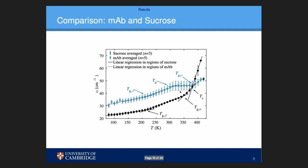If you look at the sample containing only protein, the figure looks slightly different. What you can see here in blue is that as you increase the temperature, you reach Tg_beta at around 220 Kelvin — that is expected. However, as you increase it further...